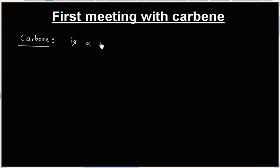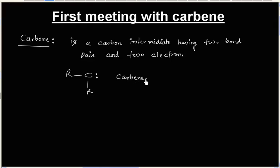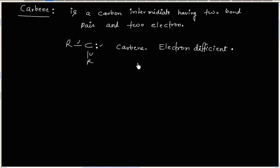Carbene is a carbon intermediate having two bond pairs and two electrons. This is the general representation of a carbene. Now, carbene has six electrons, so this is an electron deficient species. Carbene is electron deficient, so it can act as an electrophile.